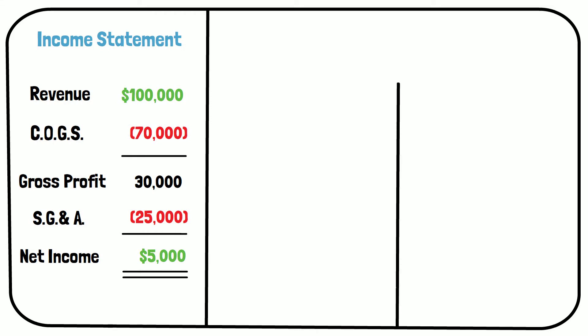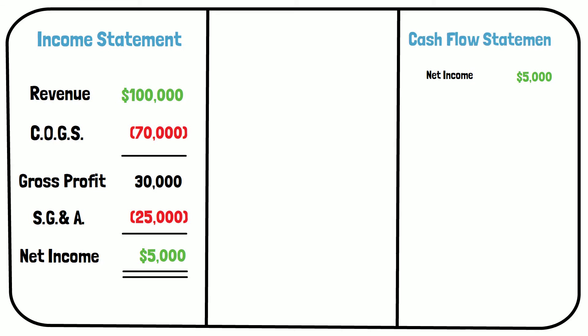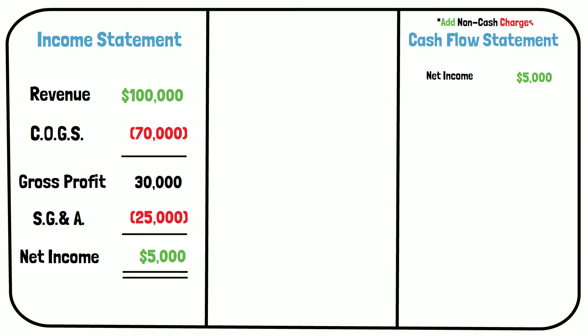Now, this $5,000 profit is the start of the cash flow statement. To see how much actual cash the business produced, and not just how much the accounting profit was, you have to add back non-cash charges.